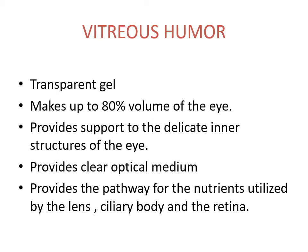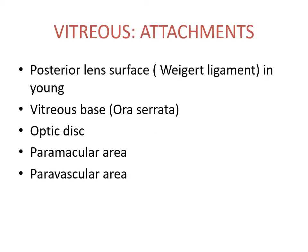The posterior chamber is larger than the anterior chamber. Vitreous humor provides support to the delicate inner structures of the eye and provides clear optical media for rays of light to pass through and fall on the retina. It also provides a pathway for nutrients utilized by the lens, ciliary body, and retina. Its attachments are very important: it is attached to the posterior lens surface, to the Weigert ligament in young individuals, the vitreous base at the ora serrata, the optic disc, the paramacular area, and the paravascular areas.